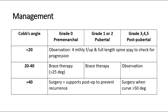Management of adolescent idiopathic scoliosis depends on the Cobb angle and the Risser sign grading, as summarized in this table. If the Cobb angle is less than 20 degrees, regardless of the Risser grade, we can offer observation, which includes 4-monthly follow-up and a full length spine x-ray to check for further progression. If the Cobb angle is between 20 and 40 degrees, it depends on the Risser grade — brace therapy may be offered, or if already post-pubertal, observation can be offered as there is lesser risk of progression.